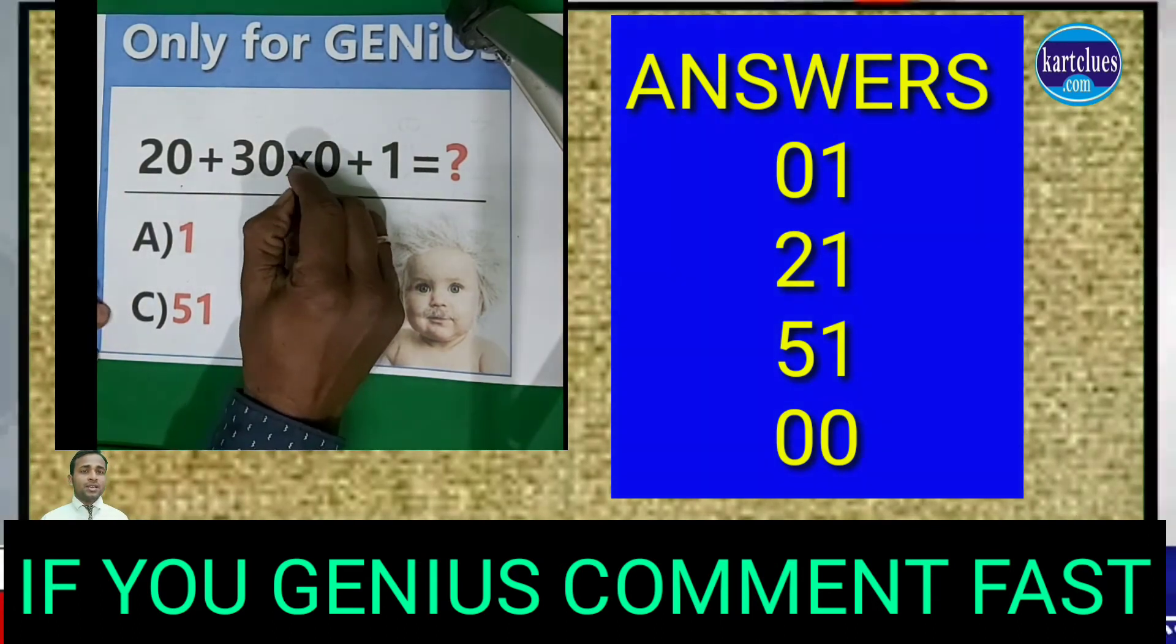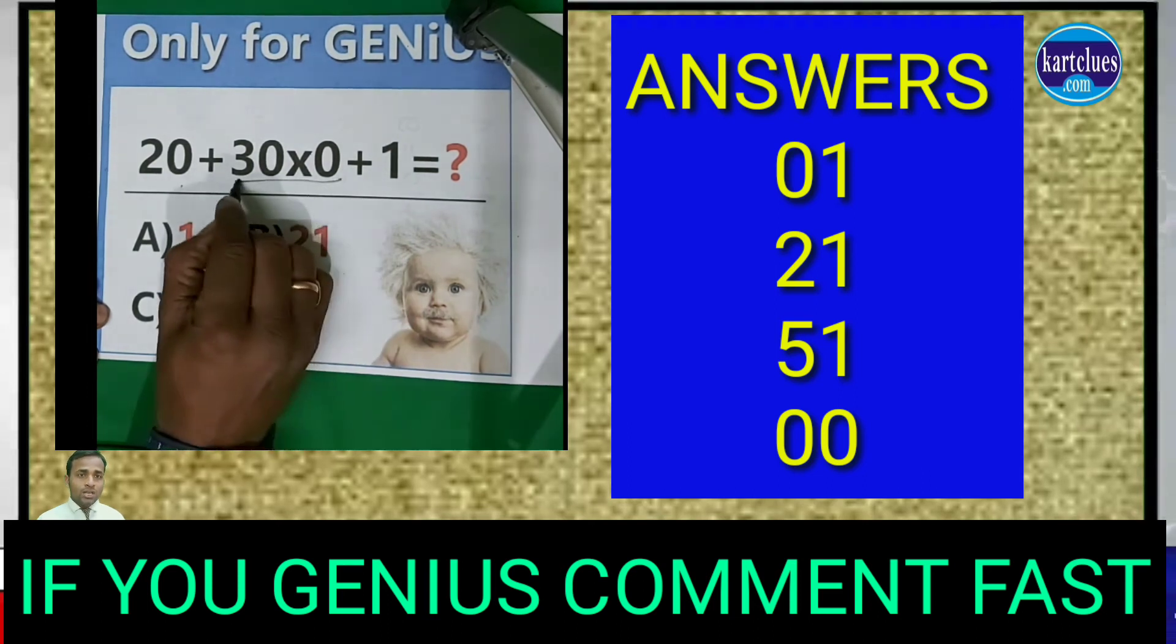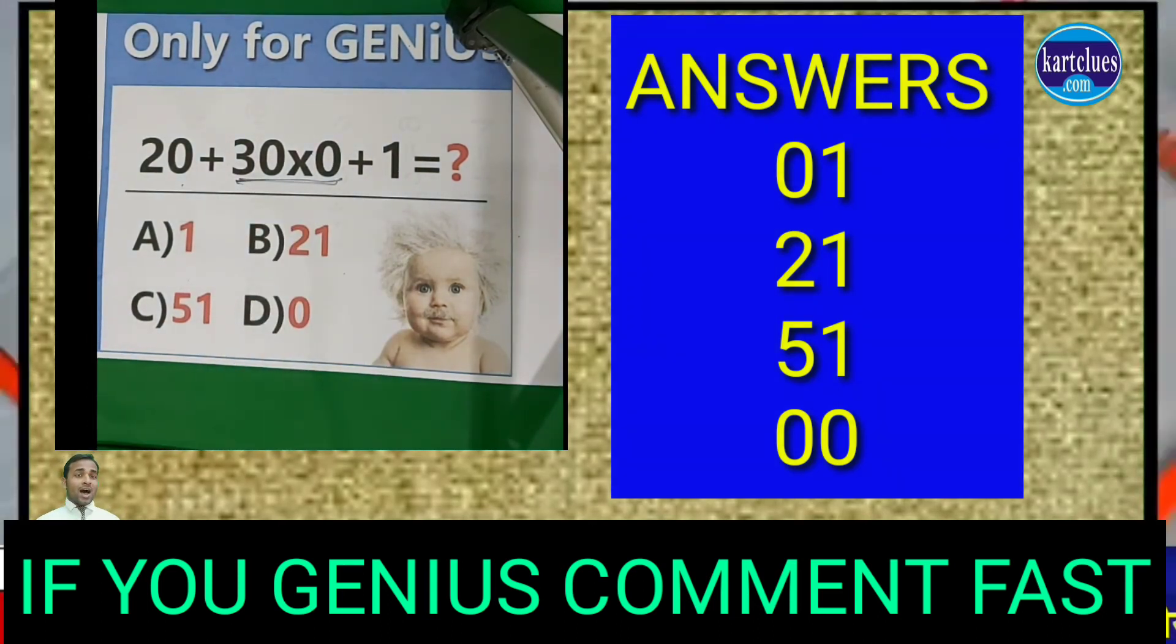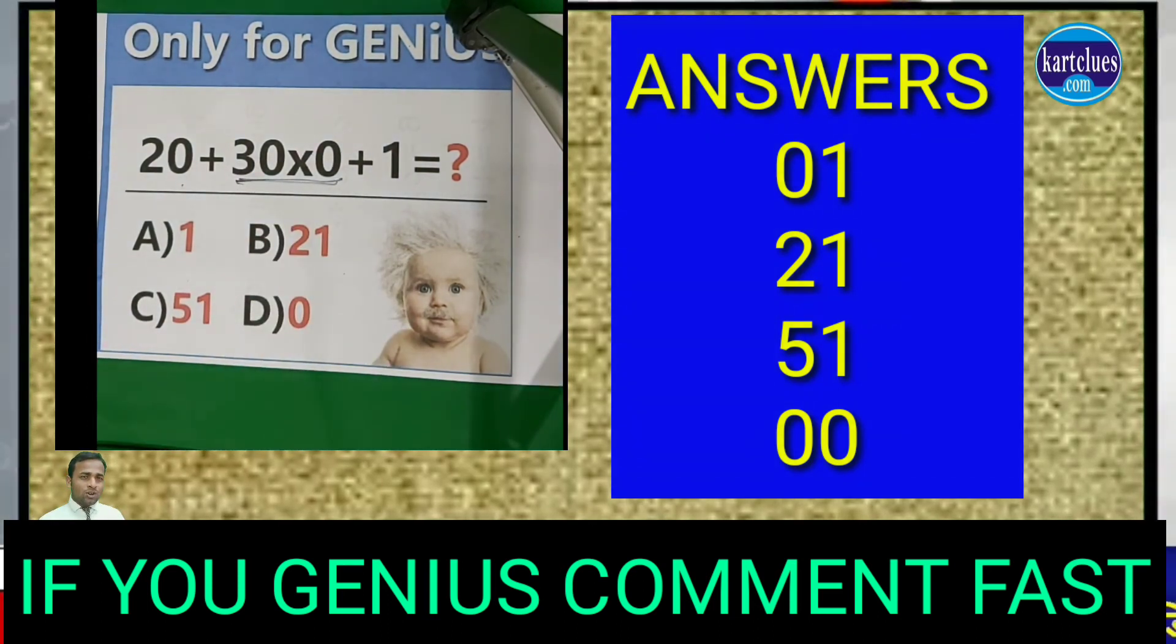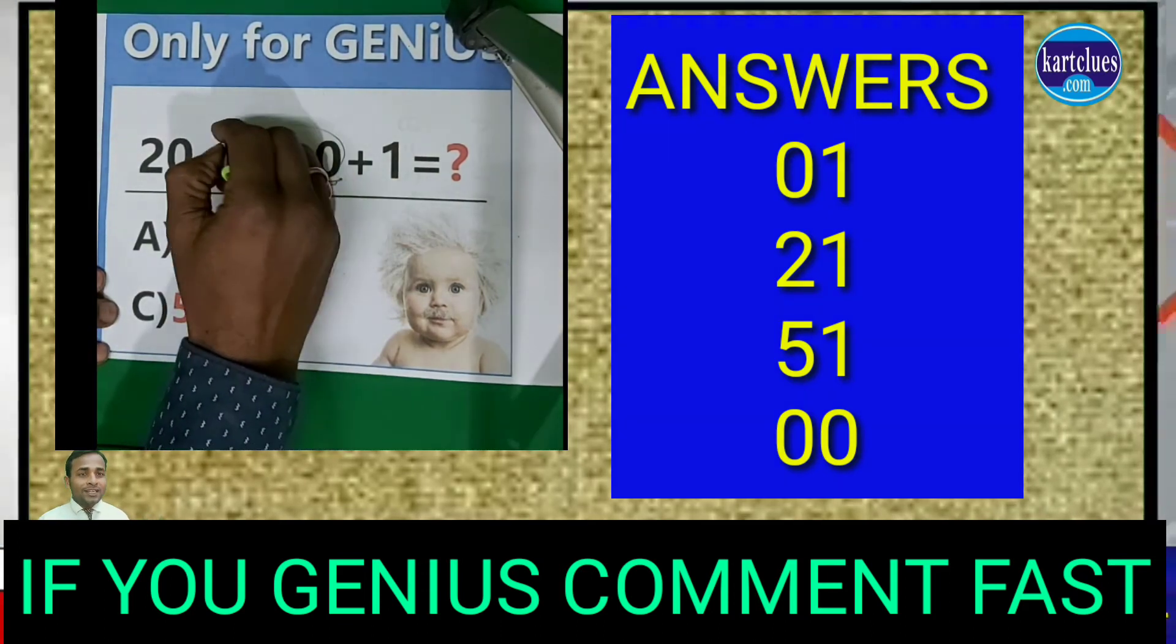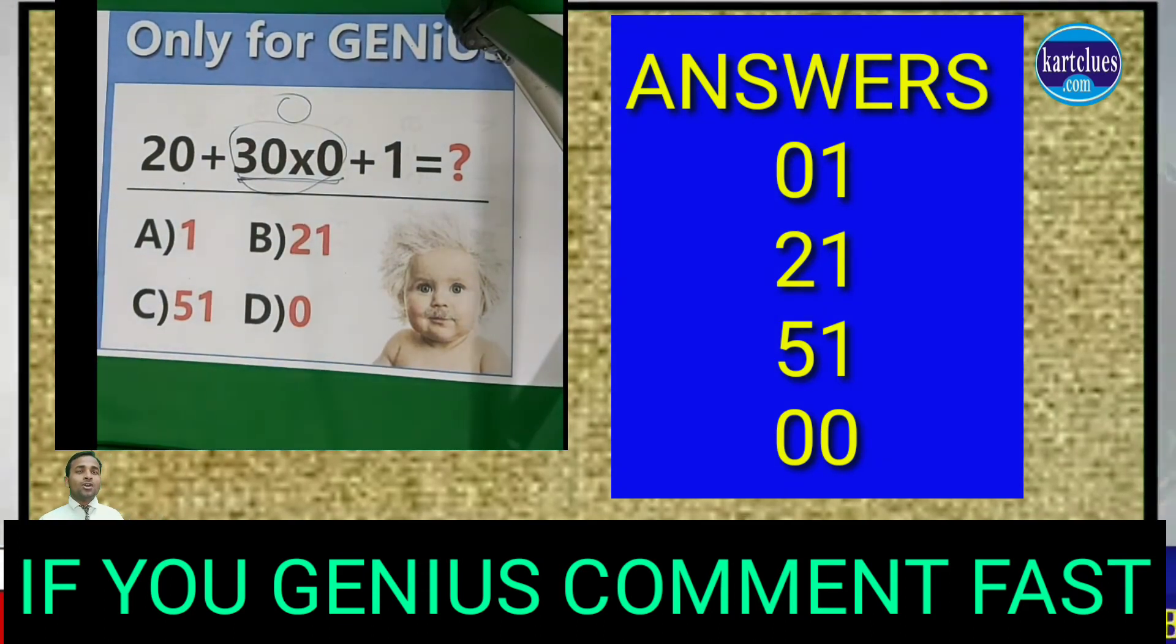First you have to do multiplication in this equation. You know very well if you multiply anything with 0, that result is 0. So 30 times 0 equals 0.